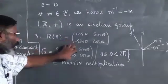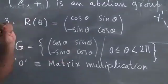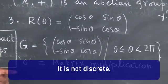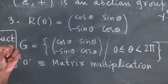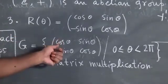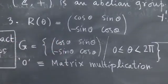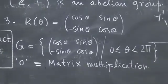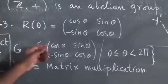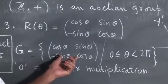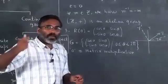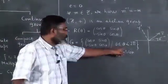Every element is a group element. I have infinitely many elements. It is not discrete because theta varies continuously — you take theta as 0.1, 0.2, and in between there are infinitely many thetas, and for every theta you have a matrix. So it is a continuous variation of a parameter. This forms a group: take R(θ) and R(φ), multiply them, and you get R(θ+φ).